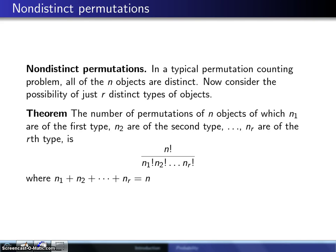So we defined an ordinary permutation, and then we defined a special case of an ordinary permutation that's known as a circular permutation. And now we're going to look at something called a nondistinct permutation, which is a second special type of permutation.